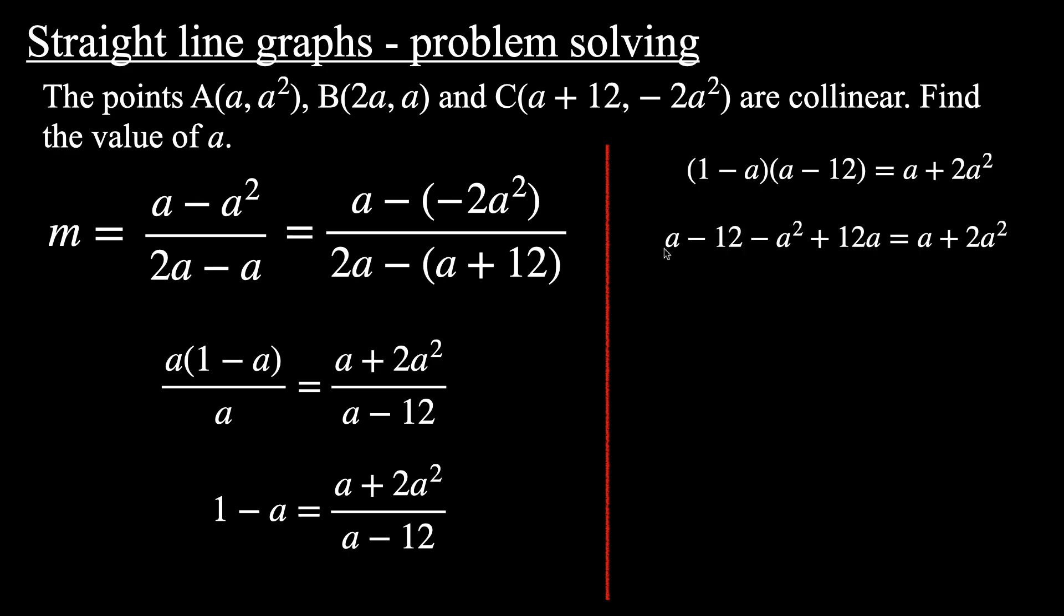So first, 1 times a is a. Outers, 1 times -12 is -12. Then -a times a is -a². And -a times -12 is positive 12a. And the right-hand side I've left as is. And then simplify the left-hand side. So we can add those like terms together. 12a plus a is 13a. And I've rearranged the order so that we have the -a² first, and the -12 on the end there.